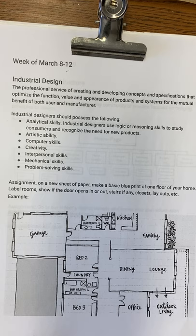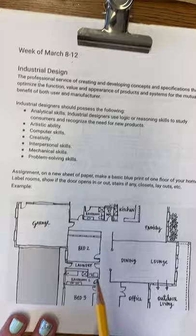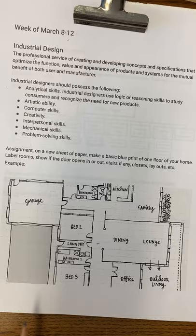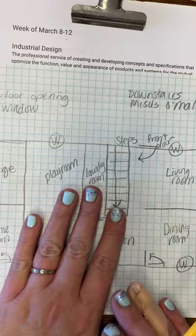On a blank sheet of paper you're going to do a basic blueprint of one of the floors of your home. I'll show you how to do it — here's the attachment for a fake house example. Get yourself some grid paper if you're in the classroom; if not, regular lined paper is fine either way.